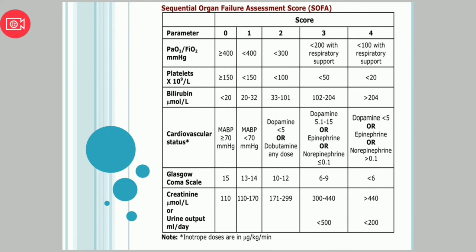For PF ratio: if equal to or more than 400, score is 0. Less than 400, score is 1. Less than 300, score is 2. Less than 200 with respiratory support, score is 3. Less than 100 with respiratory support, score is 4.